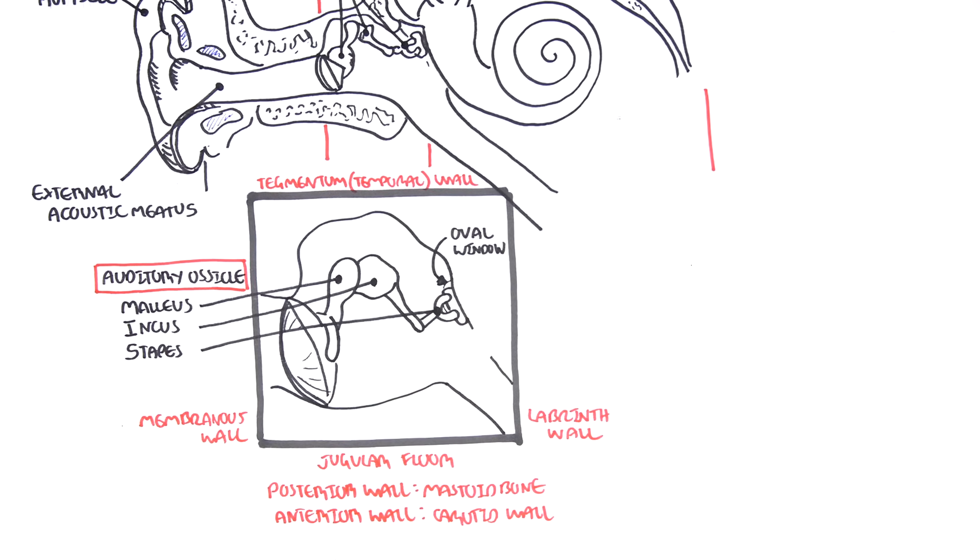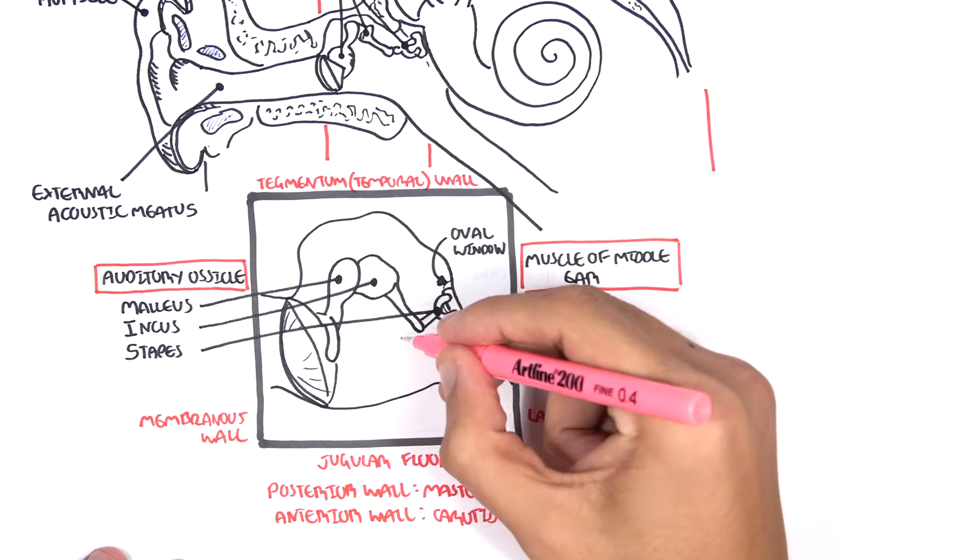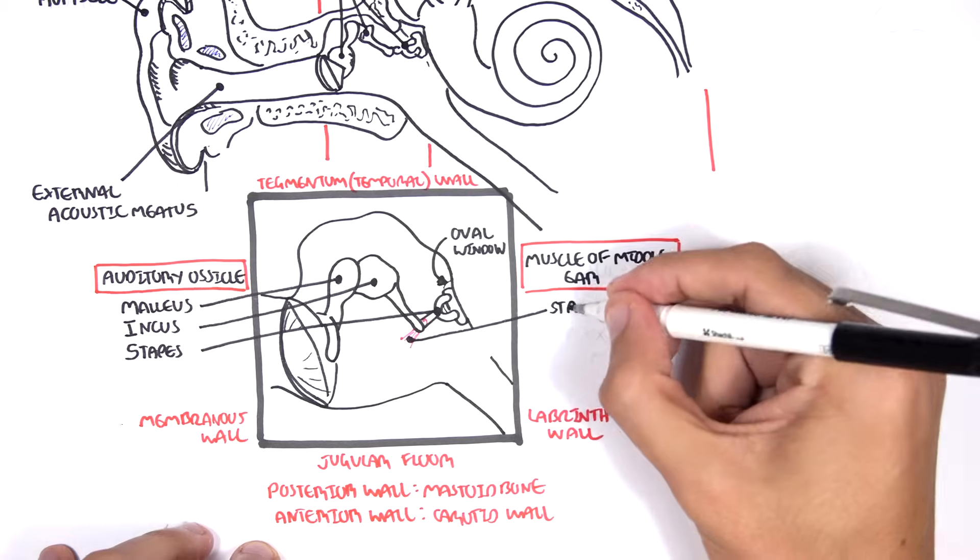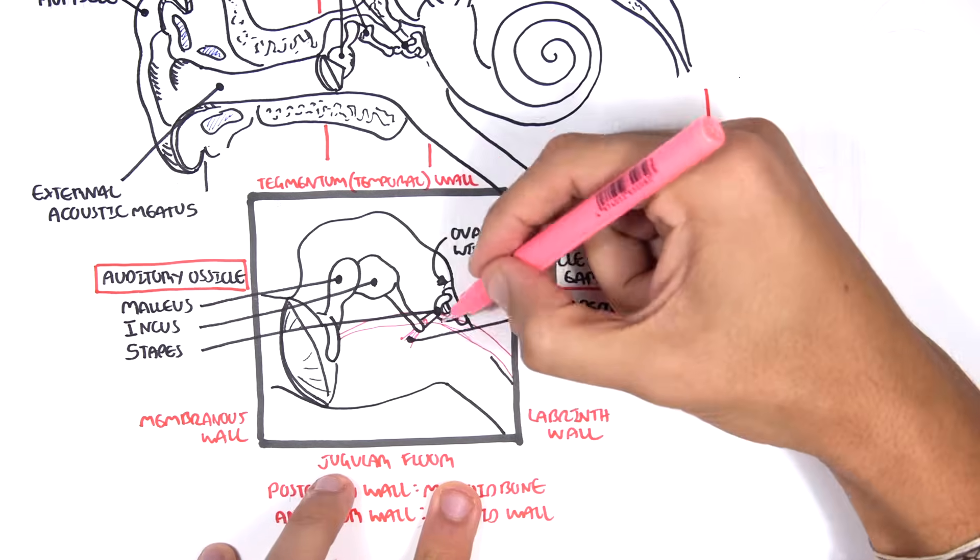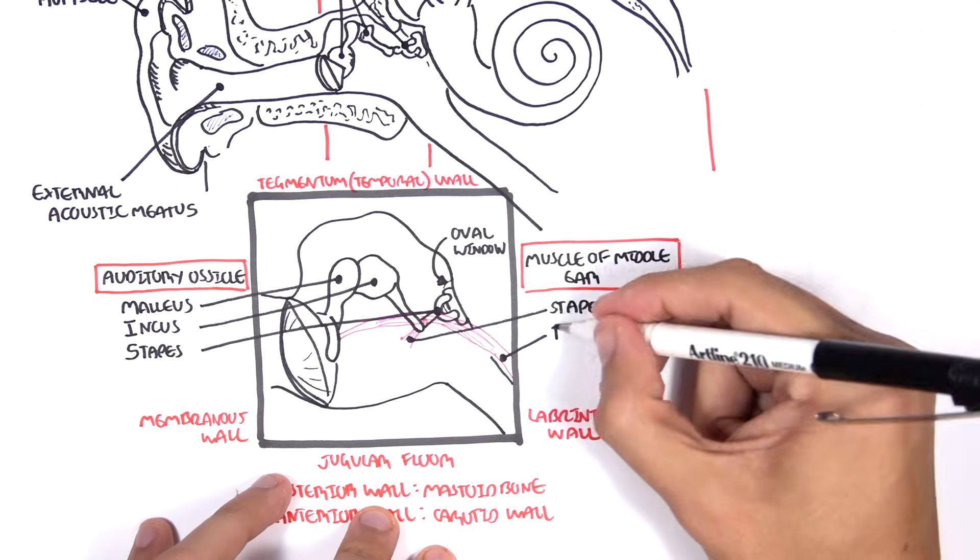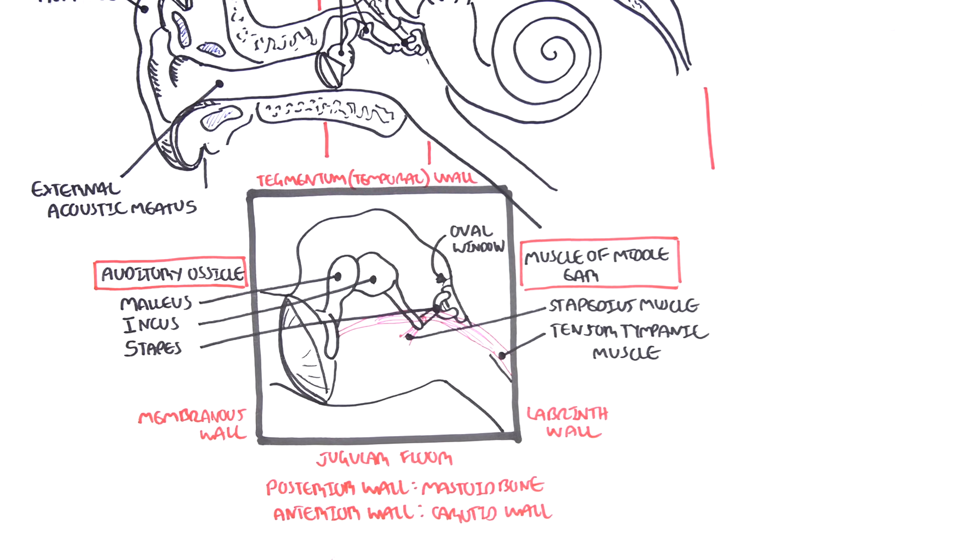Then you have muscles of the middle ear which are your stapedius muscle, which as the name suggests anchors the stapes bone. And the second muscle is the tensor tympani muscle which sort of interacts with the malleus and the tympanic membrane.